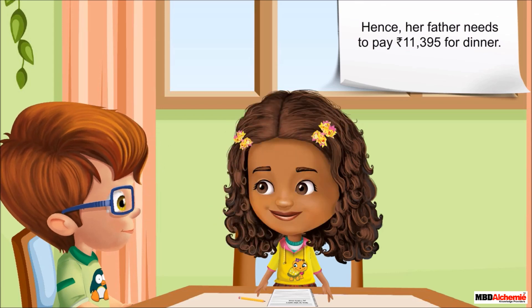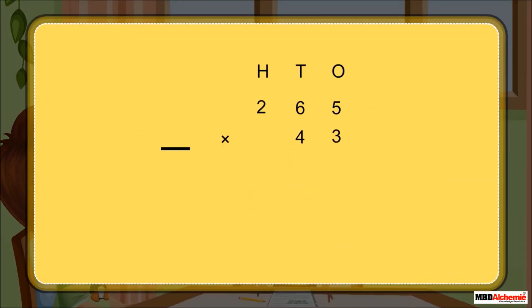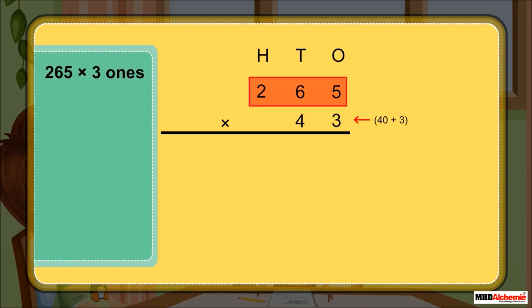Neil sees the calculation that Sophie has done to find the total cost. Then Neil explains another method to find the product of the two numbers. He arranges the numbers in column. First, multiply 265 by the digit at the ones place, that is, 3. 265 multiplied by 3.